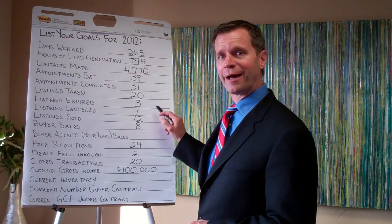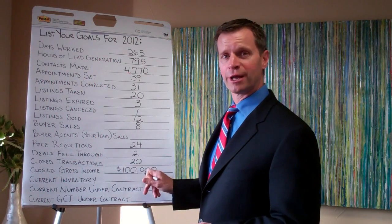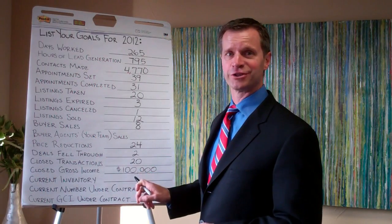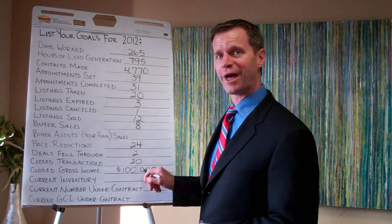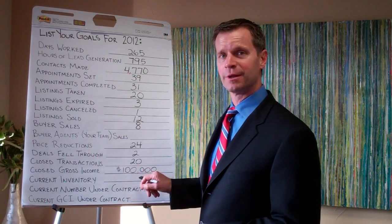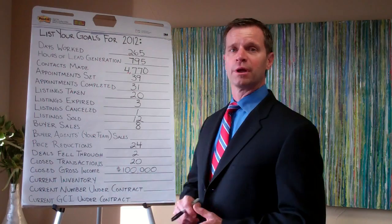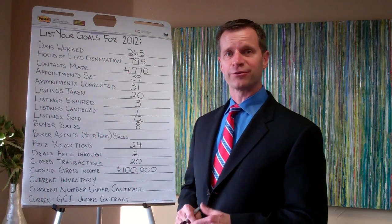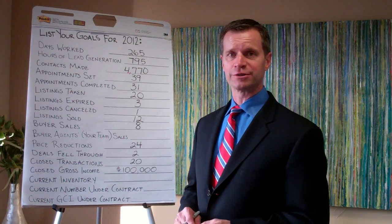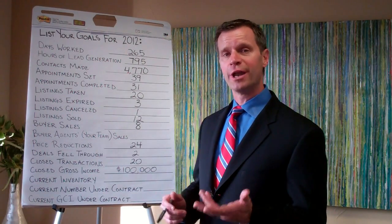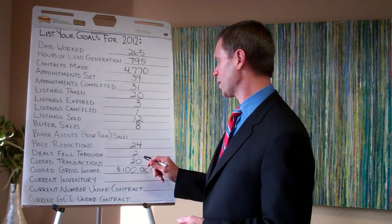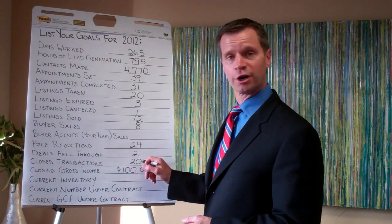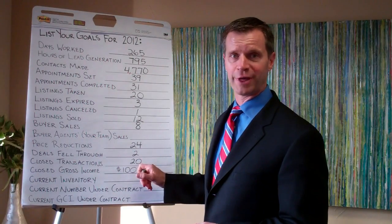Now let's go back to your goal — the income goal for 2012 which is $100,000. Let's say your average commission check is $5,000. Then we know that the number is going to be 20 units, which you're going to close for 2012.